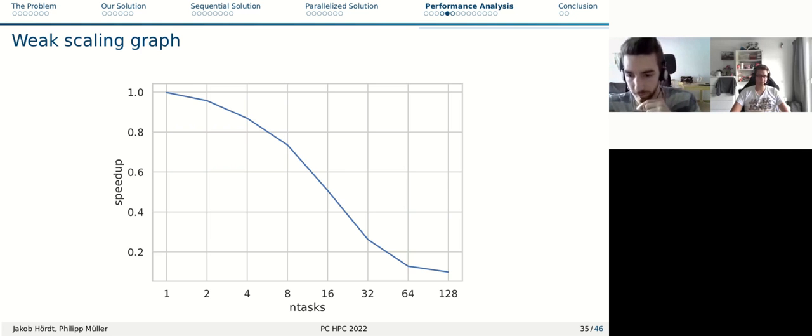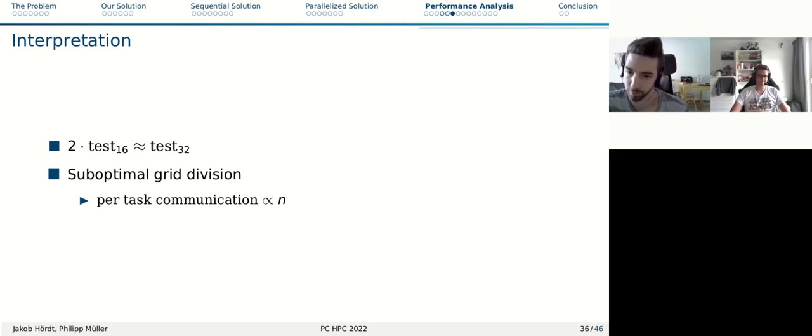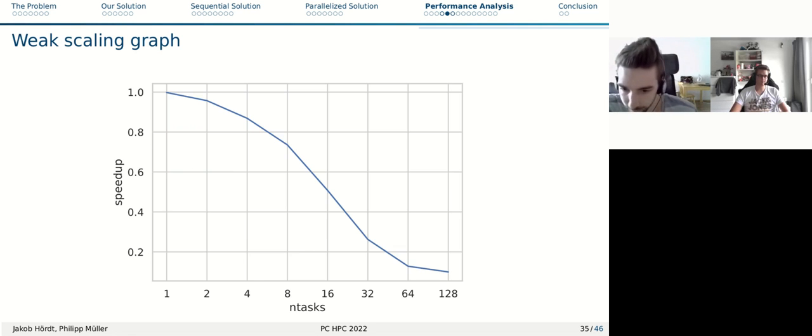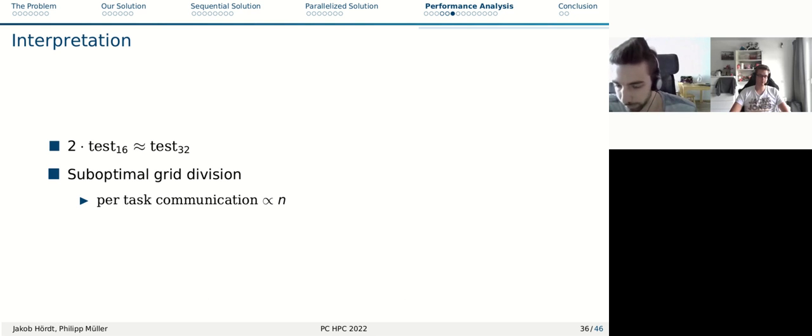Without further ado, here's the weak scaling graph. As you can see, it falls off relatively quickly at one task with the regular speed up of one. And at 128 tasks, we only have less than 0.2, maybe less than 0.1 efficiency left, which is pretty bad, to be honest. Especially at the steepest descent, we could have executed two times the test for 16 tasks in series, one after the other, and that would have been roughly as fast as the test with 32 threads.